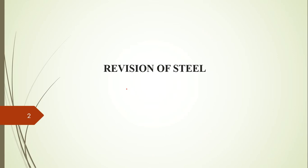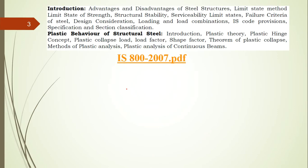All topics will be covered briefly in this section. I will explain the important and regular questions coming in your exams, as well as the design steps where you might go wrong. We will also discuss how to take values from the steel table. Let me go to the first module now. The first model is regarding the advantages and disadvantages of steel structures — a regular question in your VTU question paper.